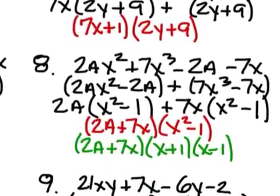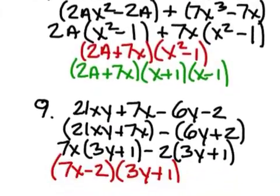For number eight it should be what's in green, which is 2A plus 7X, X plus 1 and X minus 1. Notice that you have an X squared minus 1 here which can still be factored. It's a difference of two squares just like the fast multiple choice.